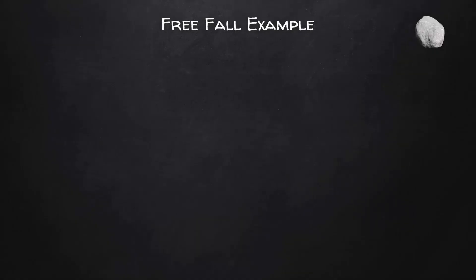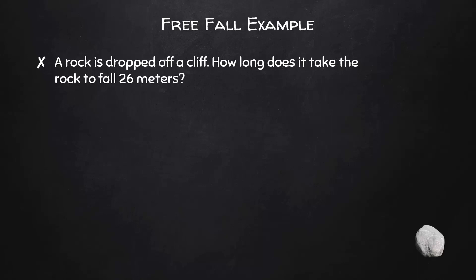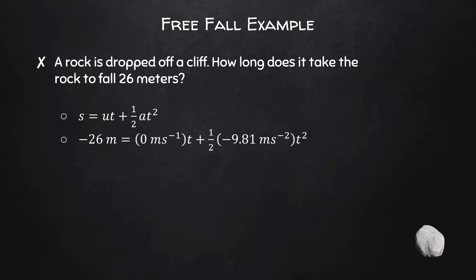A rock is dropped off a cliff. How long does it take the rock to fall 26 meters? Since we don't know the final velocity and we are looking for time, we'll use S equals UT plus one-half AT squared. We substitute in the given values, calling the displacement and acceleration negative since they are downward, and find it takes the rock 2.3 seconds to fall.